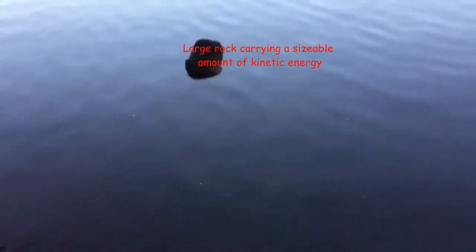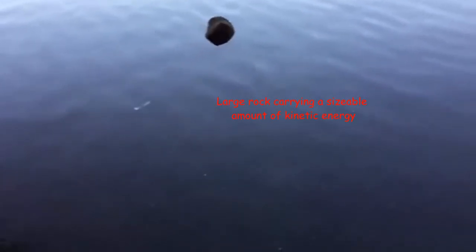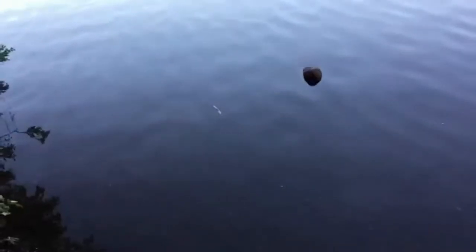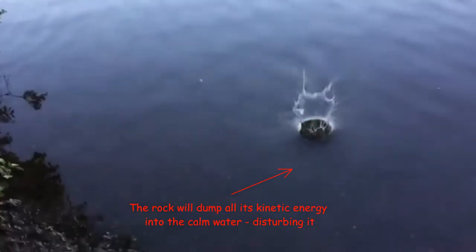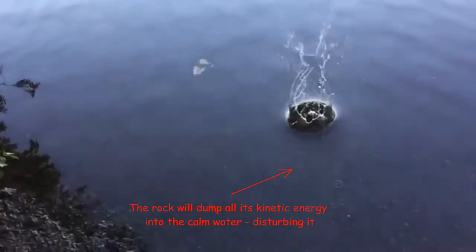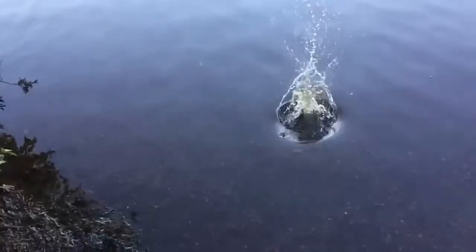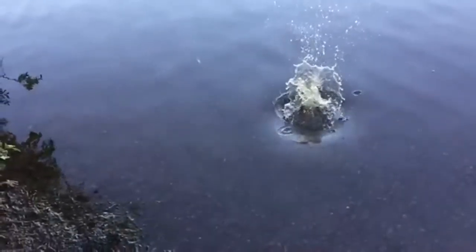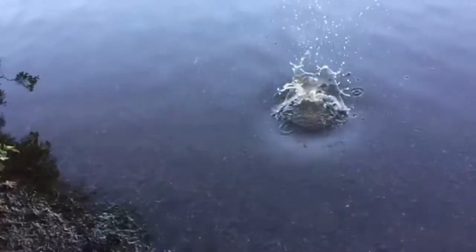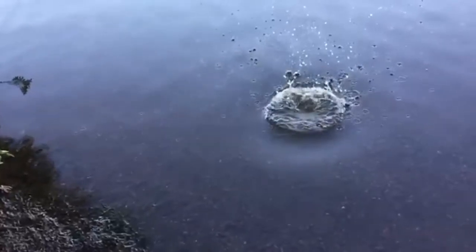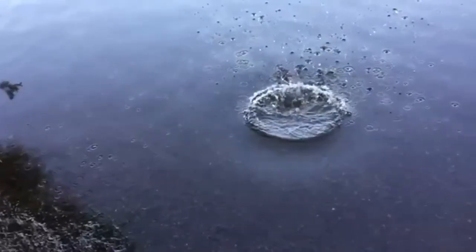An easy way to visualize what a wave is, is to stand at the edge of a lake, a calm still lake, and to chuck a large rock into it. This large rock carries kinetic energy and will dump this kinetic energy into the lake, upsetting it and creating turmoil in the lake. At the point of impact where the kinetic energy is dumped, water waves will be created and will spread outwards, carrying this energy away from the point of impact to another point in space.